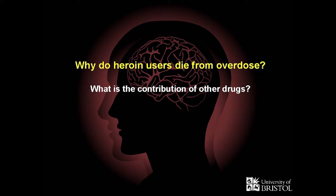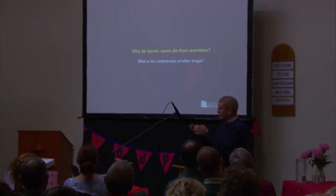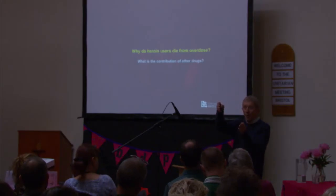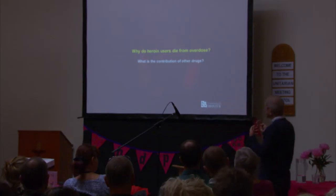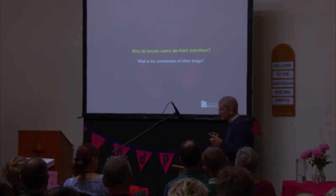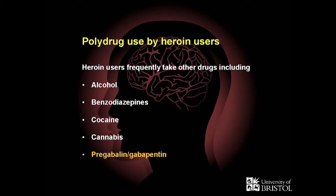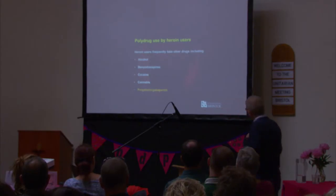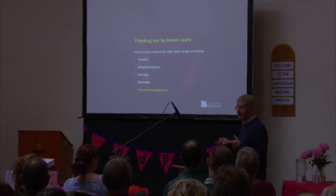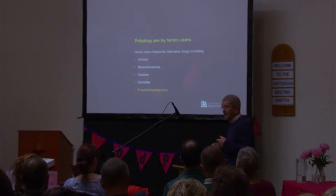Why is it that experienced heroin users die of overdose? People like Matt are always telling me that the biggest group are people who've been on heroin for about 20 years — you'd think by that time they were quite experienced and wouldn't make mistakes about the amount they were using. That got us thinking about the influence of other drugs on heroin, and whether other drugs make it more dangerous. The common drugs heroin users take are alcohol, benzodiazepines, cocaine, cannabis, and most recently pregabalin and gabapentin.